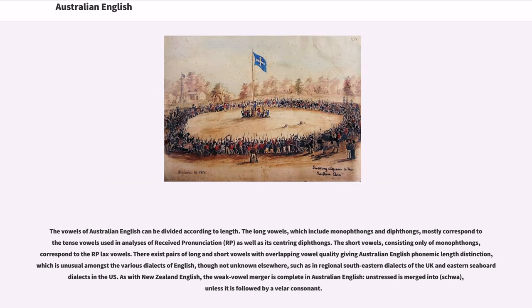The vowels of Australian English can be divided according to length. The long vowels, which include monophthongs and diphthongs, mostly correspond to the tense vowels used in analyses of Received Pronunciation, as well as its centering diphthongs. The short vowels, consisting only of monophthongs, correspond to the RP lax vowels. There exist pairs of long and short vowels with overlapping vowel quality giving Australian English phonemic length distinction, which is unusual amongst the various dialects of English, though not unknown elsewhere, such as in regional Southeastern dialects of the UK and Eastern Seaboard dialects in the US.